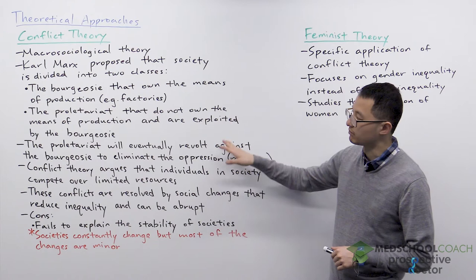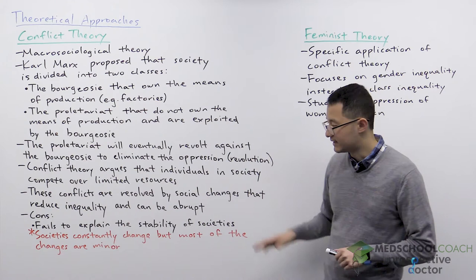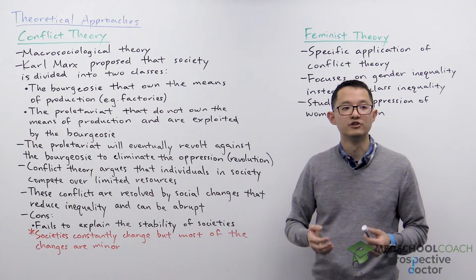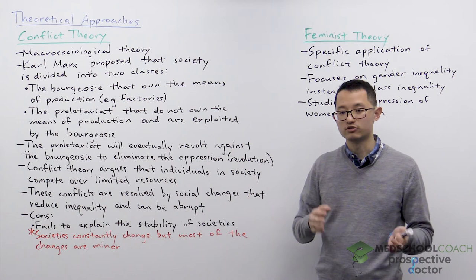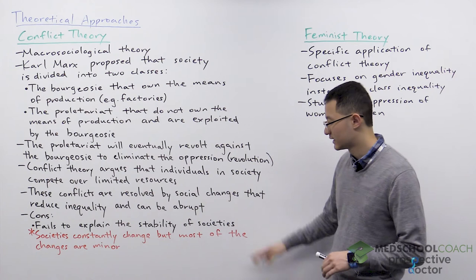Conflict theory doesn't have to apply only to the bourgeoisie and the proletariat. It can be generalized to the idea that individuals and societies compete over limited resources. This competition will eventually be resolved by social changes that reduce inequality, and these social changes can also be abrupt — which is another difference from functionalism, where changes are slow. In conflict theory, changes can be very significant and very swift.